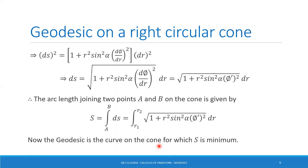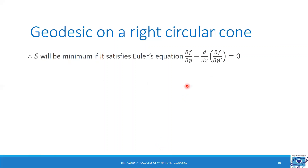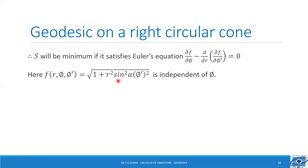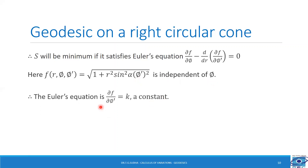Now, for a geodesic on the cone, the arc length s must be minimum. For arc length s to be minimum, it must satisfy Euler's equation: ∂f/∂φ − d/dr (∂f/∂φ′) = 0. Here, f(r, φ, φ′) = √(1 + r² sin²α φ′²). Since f contains only r and φ′ and is independent of φ, the Euler's equation reduces to ∂f/∂φ′ = k, which is a constant.